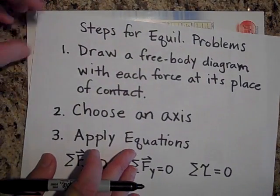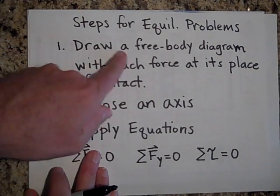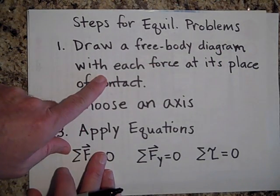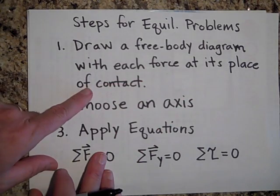Let me tell you then how to solve an equilibrium problem. There's basically three steps. Step number one is you're going to draw a free body diagram of the thing that you want to keep in equilibrium with the forces at their places of contact.